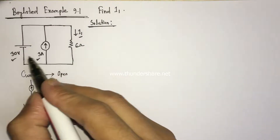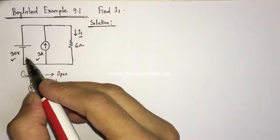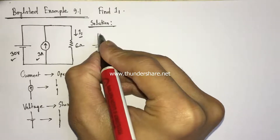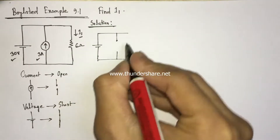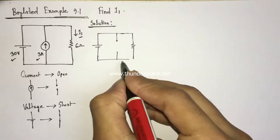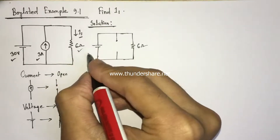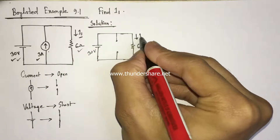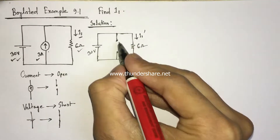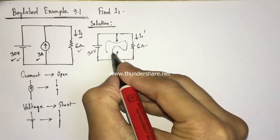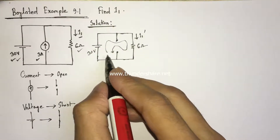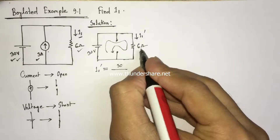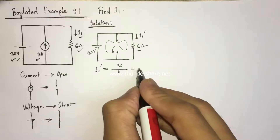Let us first consider the effect of the voltage source. The equivalent circuit will have the 30 volt source, with the current source replaced by an open circuit, and the 6 ohm resistance. Let the current be I1 prime. Since the current source path is open, current flows through one route only. We can identify I1 prime simply by using Ohm's law: I1 prime equals 30 volts divided by 6 ohms, so I1 prime is 5 ampere.